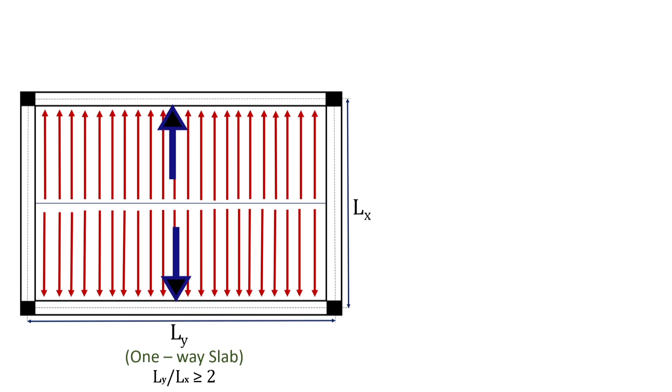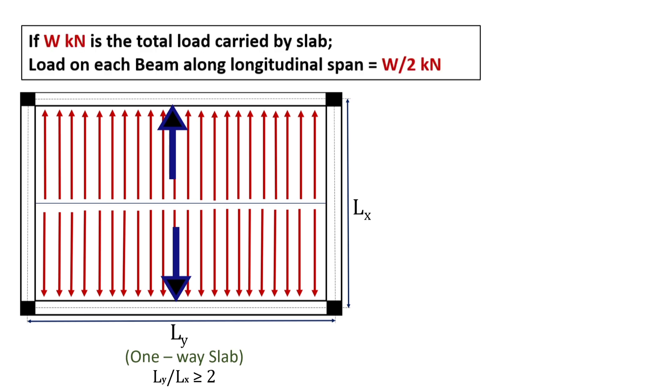In a one way slab, loads are carried in one direction only along the shorter span of the slab. The load is distributed equally among the beams supporting the longer span. For example, if the total load carried by the slab is W kN, then it will be carried equally by the longitudinal beams that is W by 2 kN each.